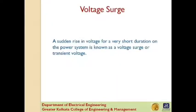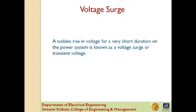Voltage Surge. What is the definition of a voltage surge? A sudden rise in voltage for a short duration on the power system is known as voltage surge or transient surge. Transients or surges are of temporary nature and exist for a very short duration, a few hundred microseconds, but they cause overvoltages on the power system. They originate from switching and from other causes.